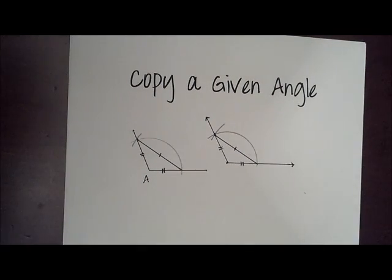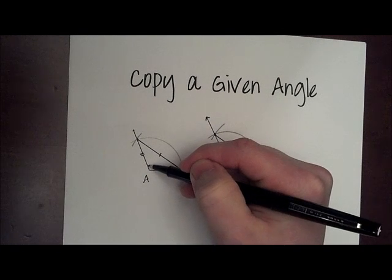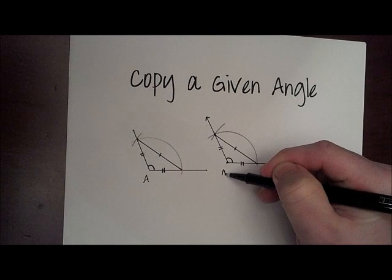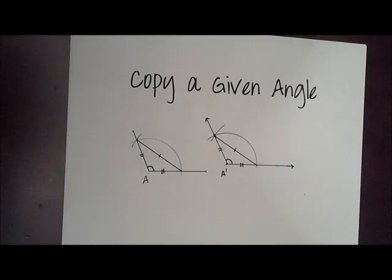So those two triangles are congruent by side-side-side, and since the two triangles are congruent, all their corresponding parts are equal. So this angle A and this angle, which I'll call A prime, are congruent to each other by CPCTC. Thanks for watching.